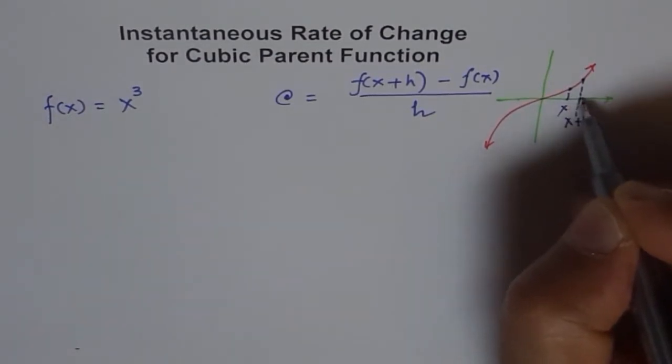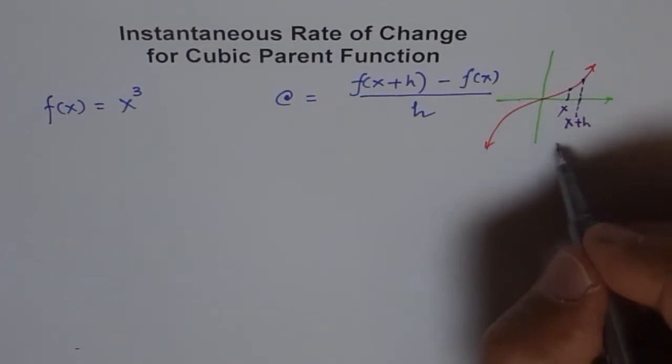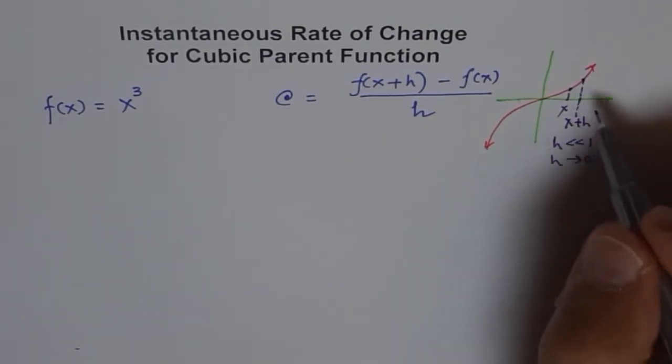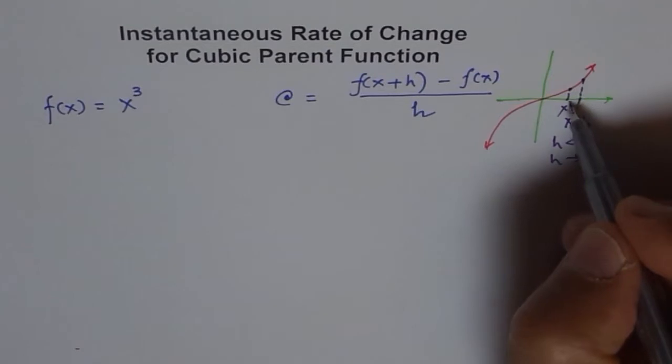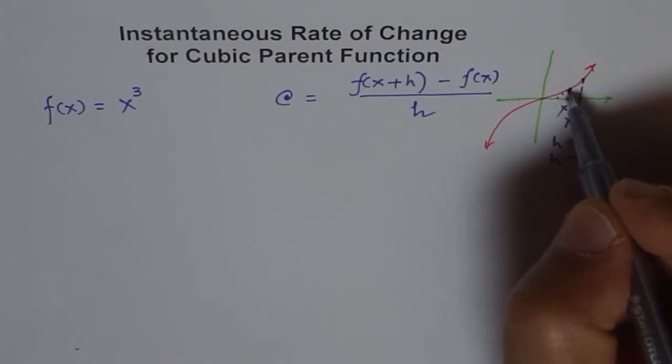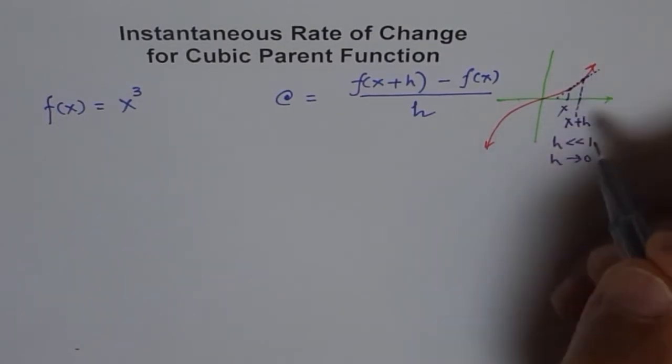This is slightly away, where h is very, very small, very close to 0, meaning h is approaching 0. At present, if I draw a line between the two, I get kind of a secant.